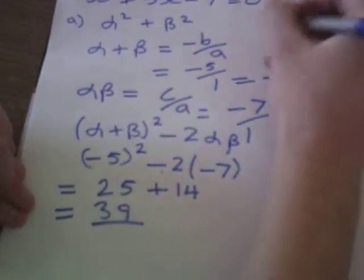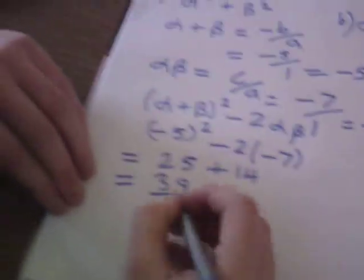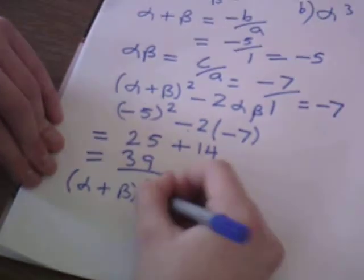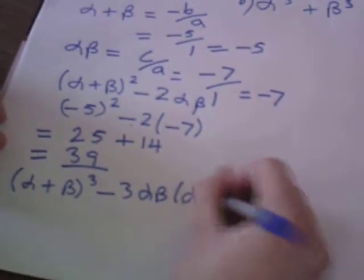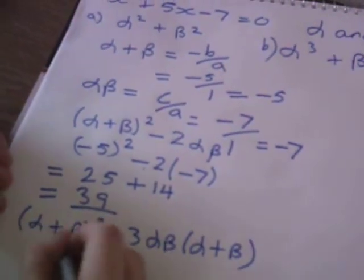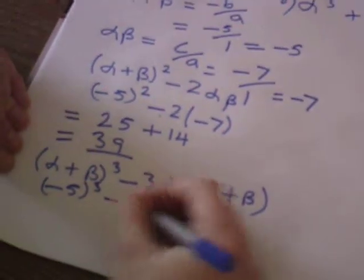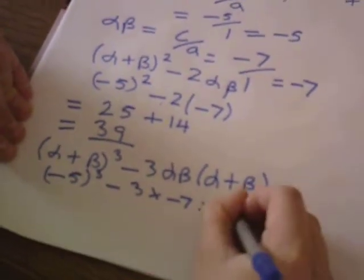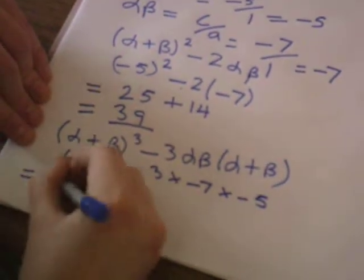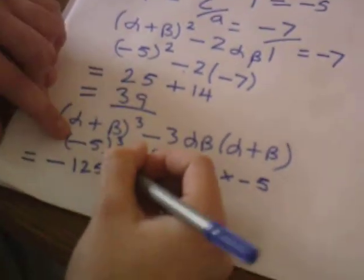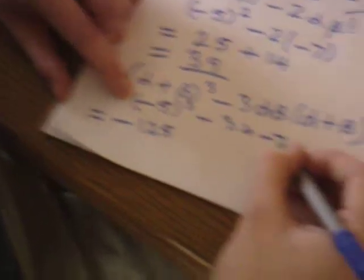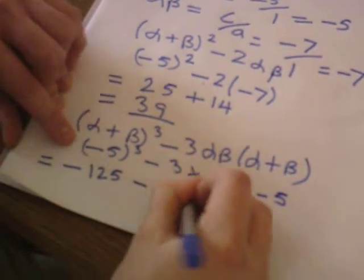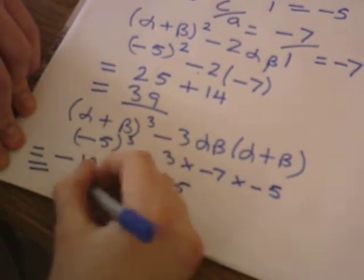Similarly, to work out alpha cubed plus beta cubed, we follow a similar formula: alpha plus beta, all cubed, minus 3 alpha beta, bracket alpha plus beta. As you can see, they're all in terms of alpha plus beta and alpha beta, so we can substitute the numerical values in. So minus 5 cubed minus 3 multiplied by minus 7 multiplied by minus 5. That gives minus 125, and minus 3 times minus 7 is 21, multiplied by minus 5 is minus 105, which gives alpha cubed plus beta cubed equals minus 230.